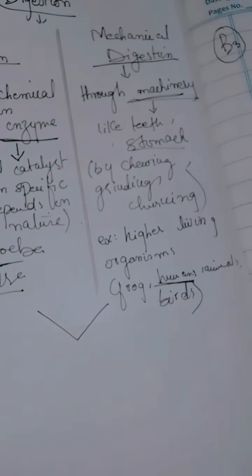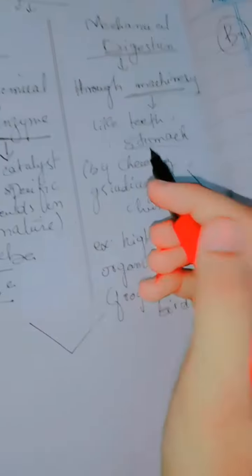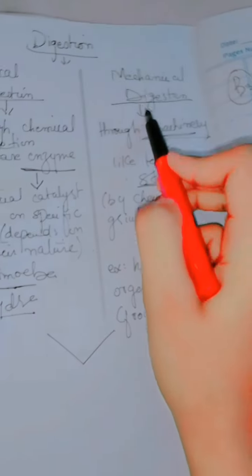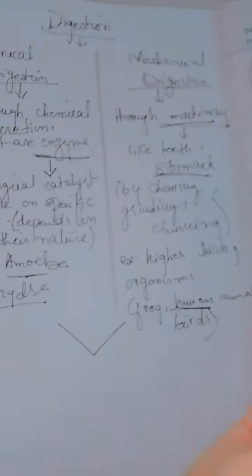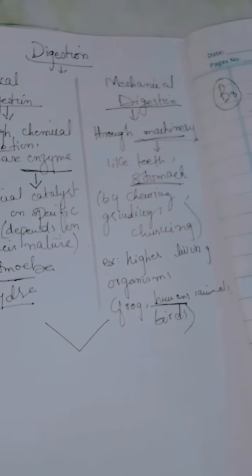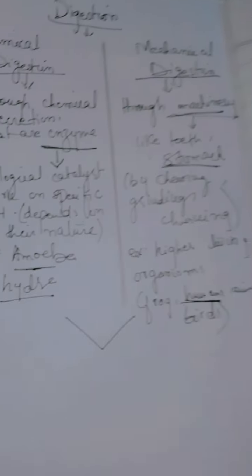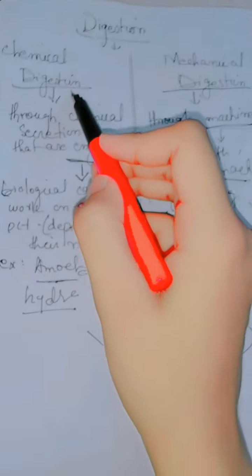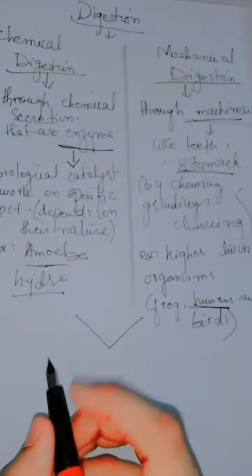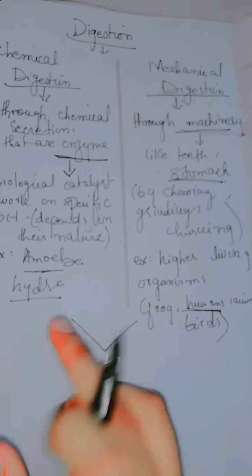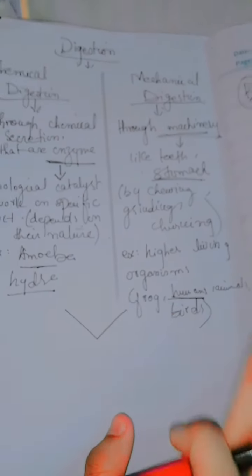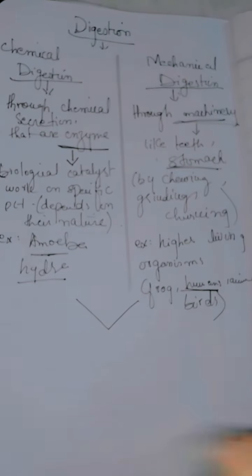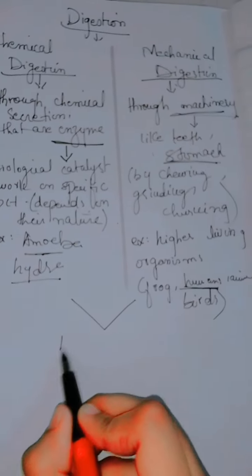In humans, for example, we have teeth for chewing and a stomach where the churning process happens — that is mechanical digestion. For chemical digestion, our saliva contains the enzyme amylase, which breaks down complex food molecules into simpler molecules. So higher living organisms like frogs, humans, animals, and birds all have both chemical and mechanical digestion.